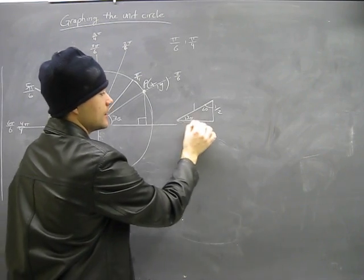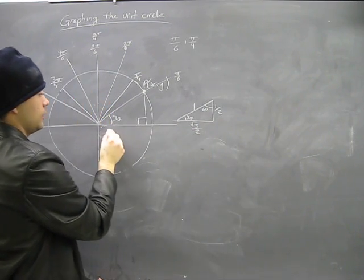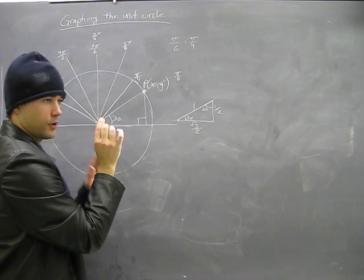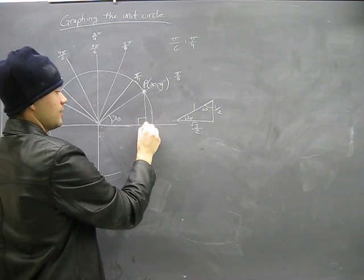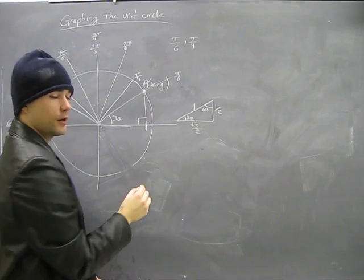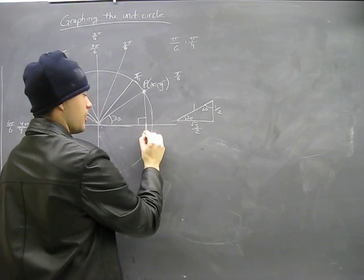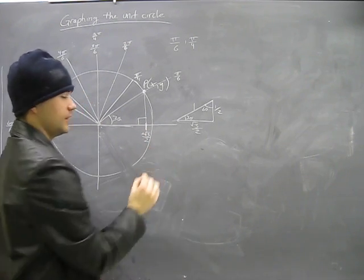Now, if this is the distance, root 3 over 2, we are going to the right a positive distance. So that means this spot on the x-axis is positive root 3 over 2. It's just that equal.